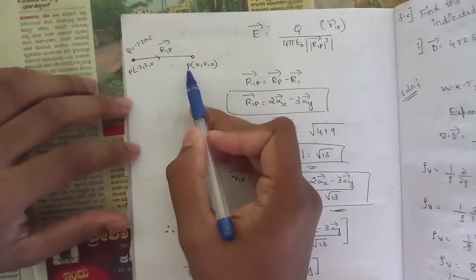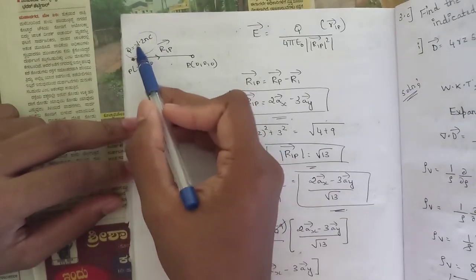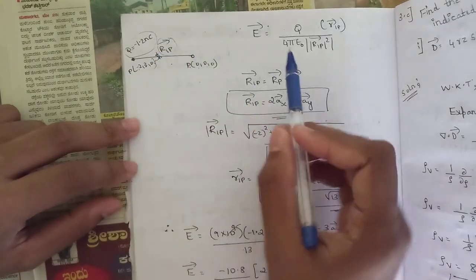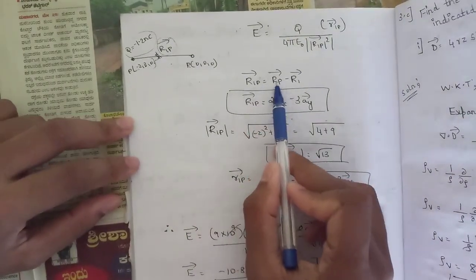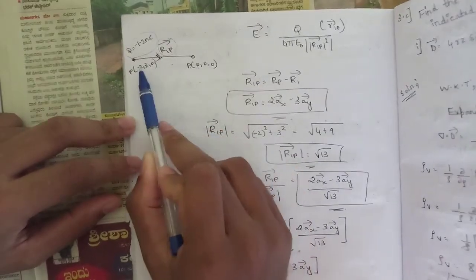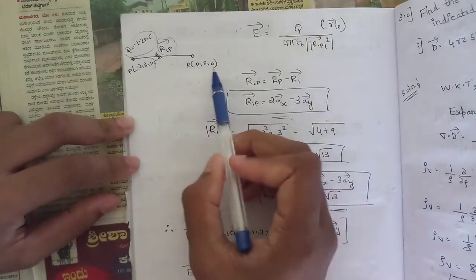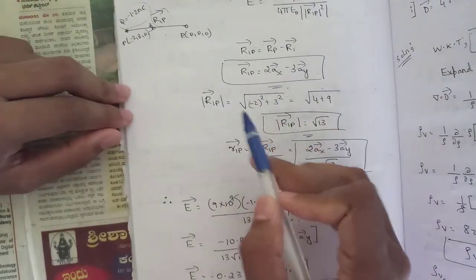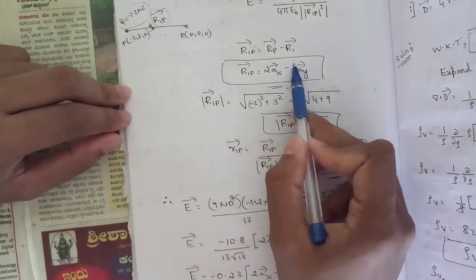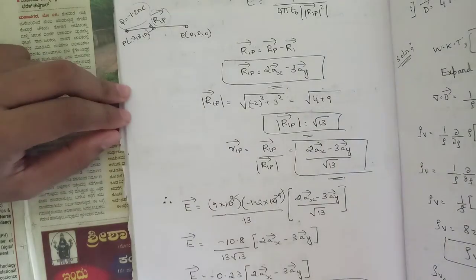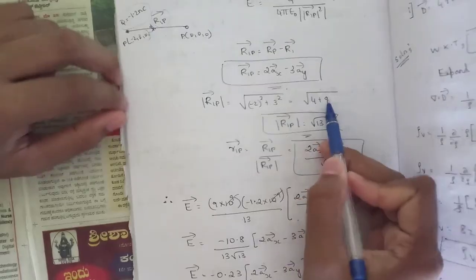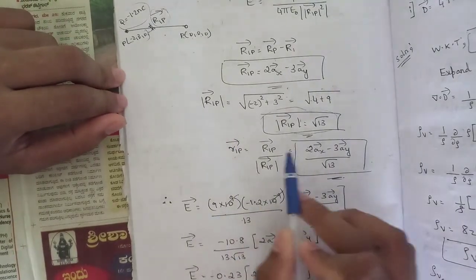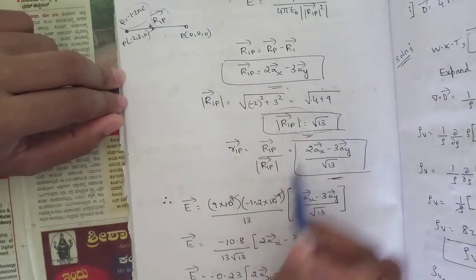From origin (0,0,0), charge is −1.2 nanocoulombs at (−2, 3, 0). r₁p equals rp minus r1: (0 − (−2)) ax plus (0 − 3) ay, giving 2ax minus 3ay. Magnitude is √(4 + 9) equals √13. Unit vector r̂₁p equals (2ax − 3ay) divided by √13.